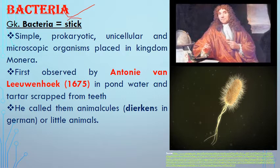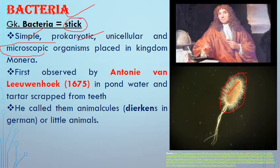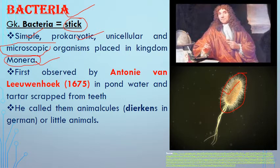Next, we discuss bacteria. The word 'bacteria' in Greek means stick or rod-like structure. Bacteria are simple, prokaryotic, unicellular, microscopic organisms — very small in size. They are placed in kingdom Monera, the first kingdom in Whittaker's five-kingdom classification, which includes all prokaryotes. Prokaryotes are cells in which the true nucleus — or nuclear membrane — is absent, and most cell organelles are absent except ribosomes.